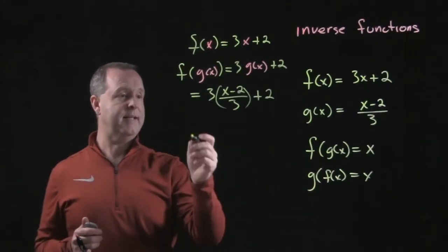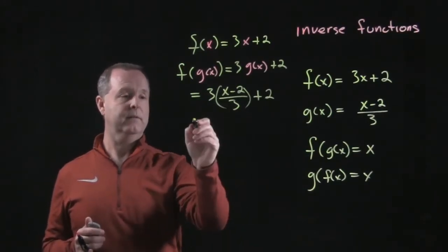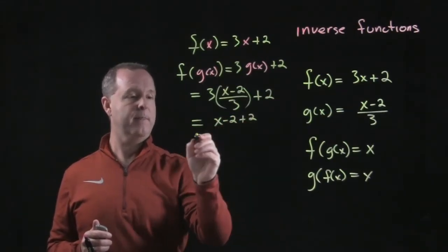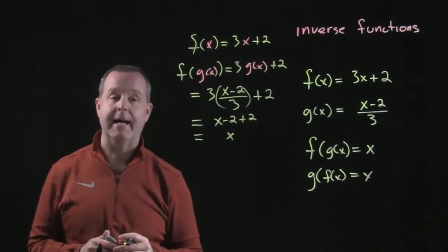Let's simplify that down. The 3's cancel, or factor out, left with an x minus 2 plus 2, and that equals x.